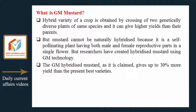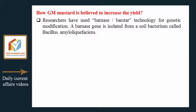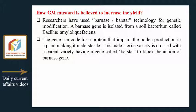Researchers have used barnase-barstar technology for genetic modification. A barnase gene is isolated from a soil bacterium called Bacillus amyloliquefaciens. This gene codes for a protein that impairs pollen production in a plant, making it male sterile.